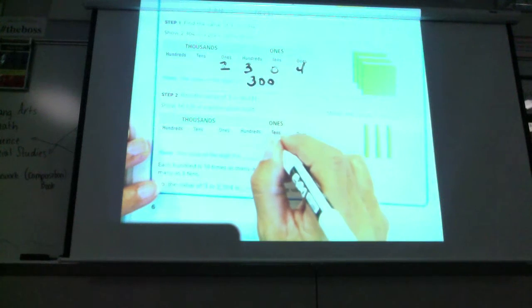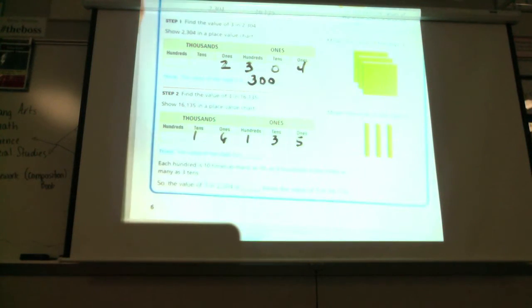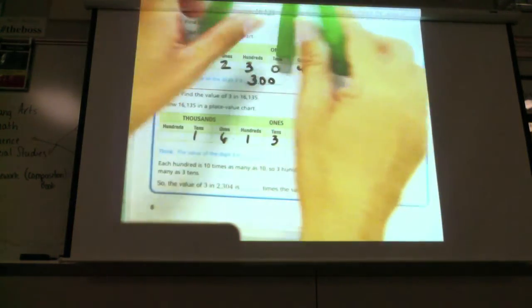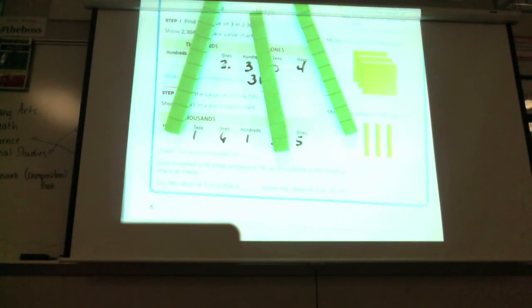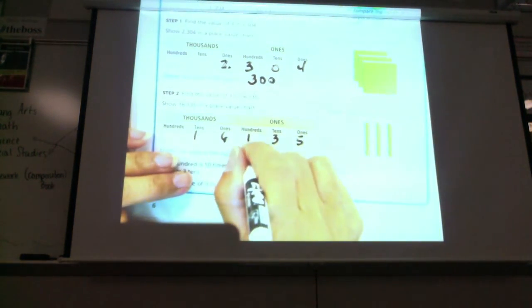Looking at the place value chart, the three — eyes are up here — the three is in what place value? Tens. It's in the tens place. So I'm going to get some ten sticks. How many do I need? Three. It tells me I need three tens. What is that worth? What is the value? Thirty. So the value of the three in this one is thirty. Each hundred is ten times as many tens, so three hundreds is ten times as many as three tens.